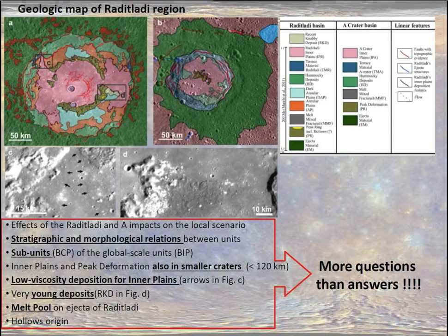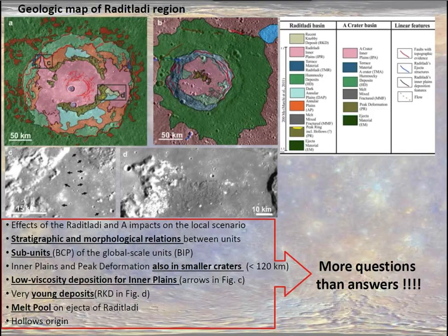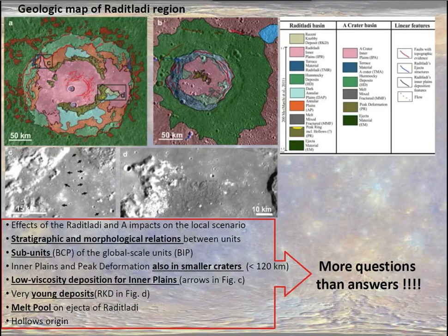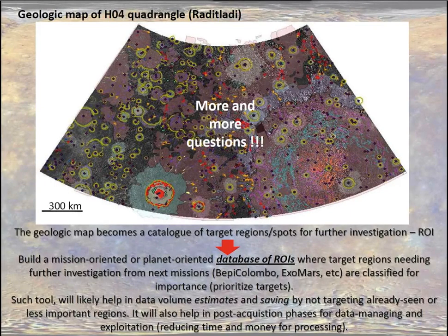We worked on the geological interpretation and mapping of the detailed regional setting of the Raditladi crater basin and an unnamed crater nearby. Most importantly, apart from the geological results, I want to point out that when a geological map is produced, the more you watch and explore the surface of the planet, the more questions and points of interest emerge. That was certainly the case for the relatively small region of the Raditladi basin — you can imagine what happened when we started working on the larger Raditladi quadrangle.